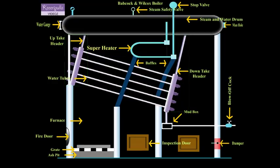Coal is fed through the fire door into the grate. Furnace: It is the space above the grate where the hot flow gas rises up to heat the water tubes.